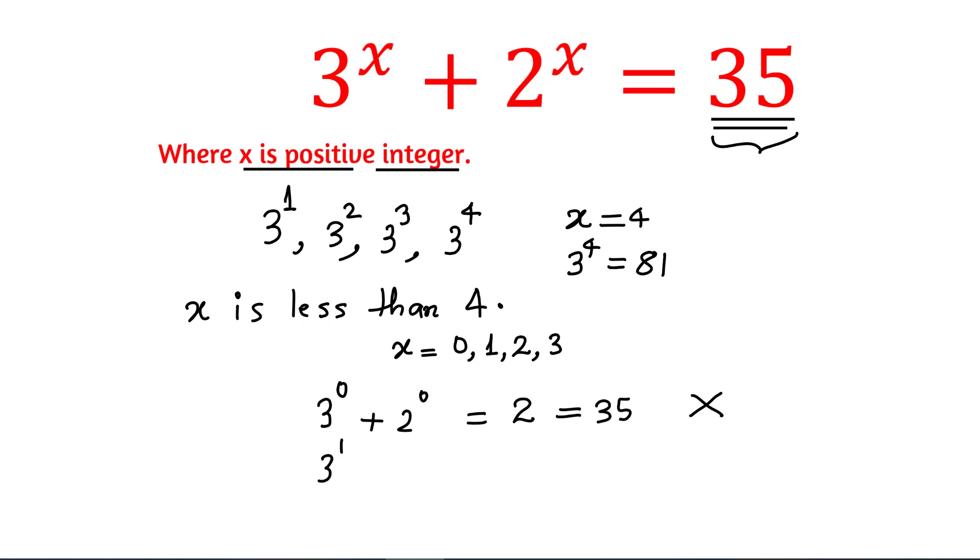Now, X is equal to 1. That is 3 raised to the power 1, 2 raised to the power 1, that is simply 5, which is not equal to 35. So X is 1 is also not a solution.